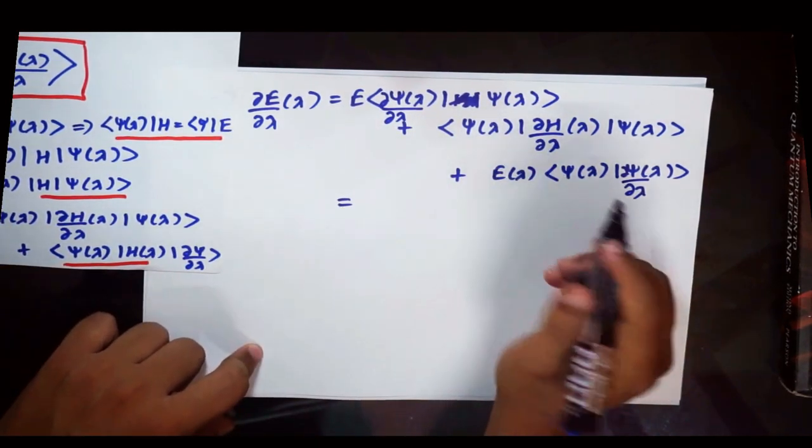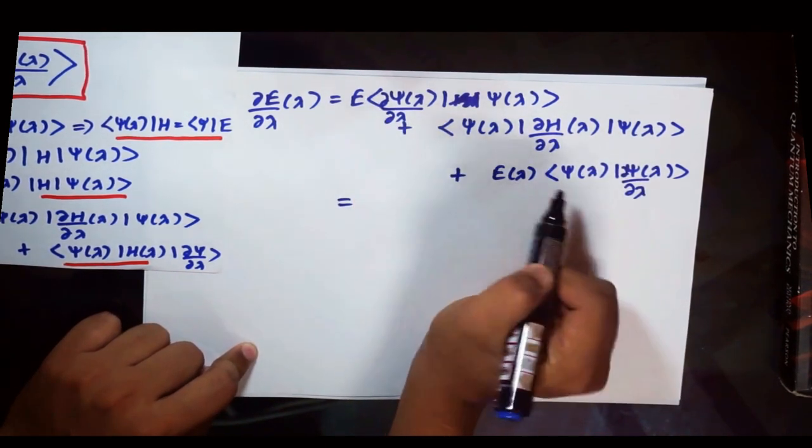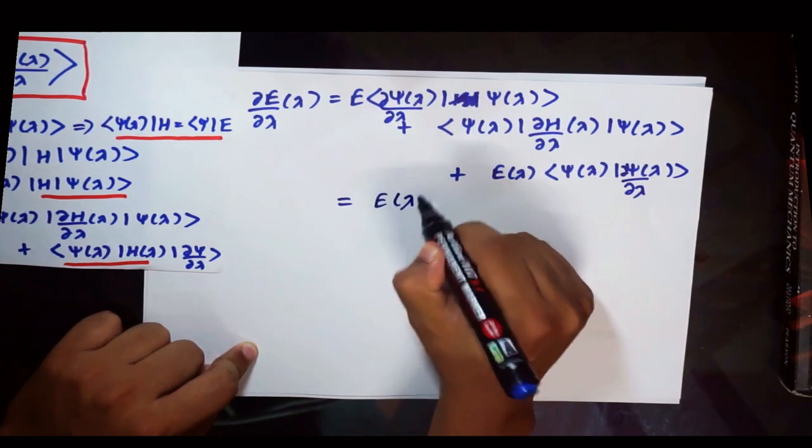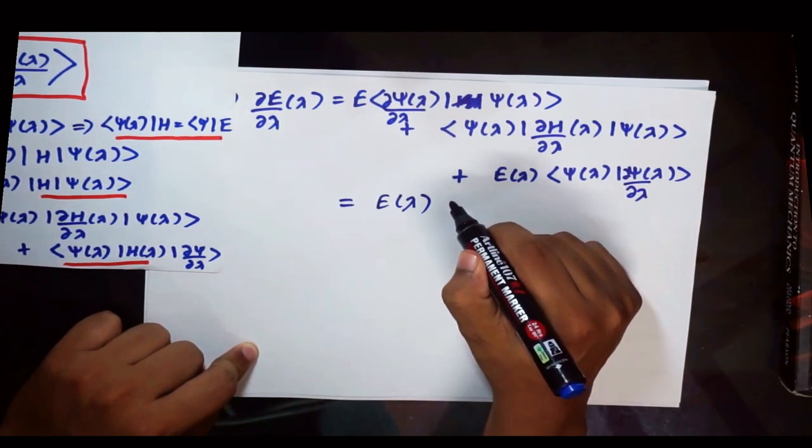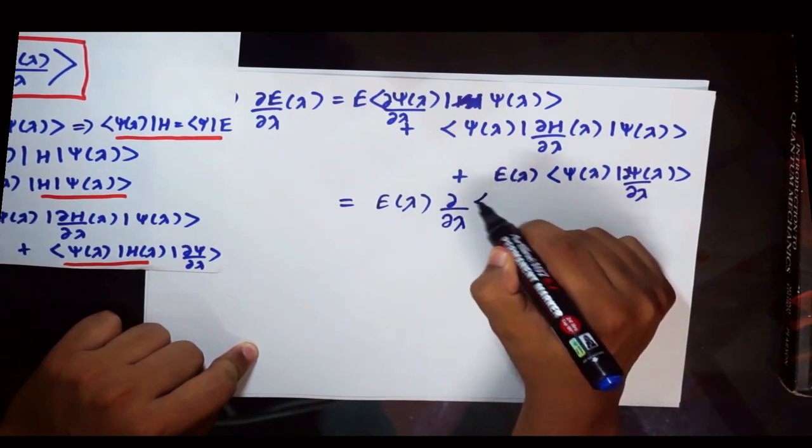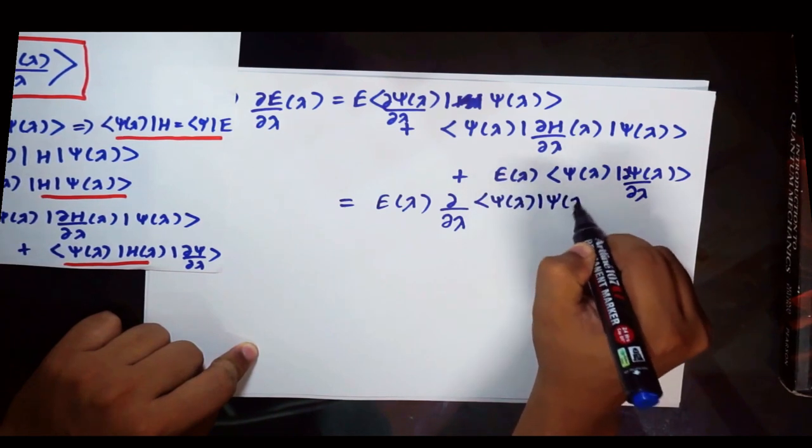Okay, so now coming back, if you look at these two terms, you can write these as E of lambda times del by del lambda, psi of lambda, psi of lambda.